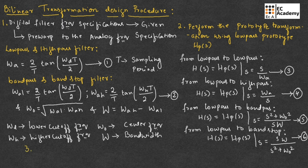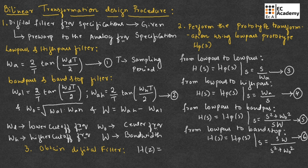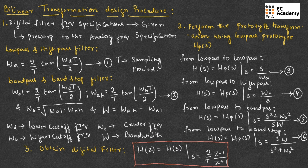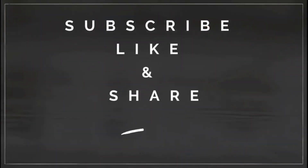In the third step, we need to obtain the digital filter by using the expression H(z) = H(s), where s should be replaced with (2/T) · (z − 1)/(z + 1). This is the bilinear transformation design procedure. Hope you have understood the topic. Thank you.